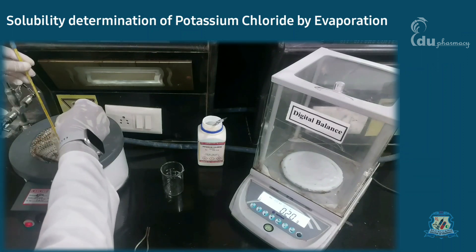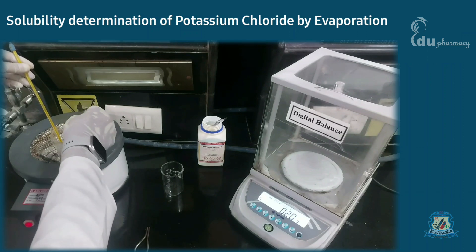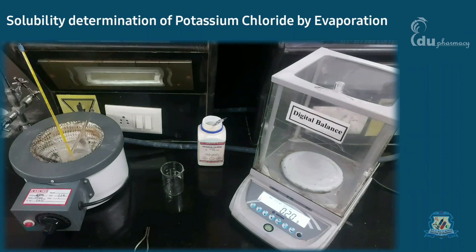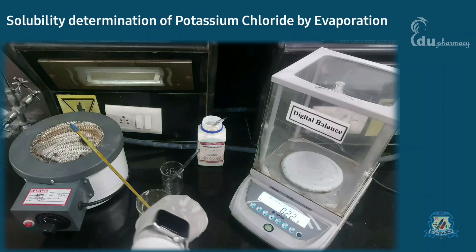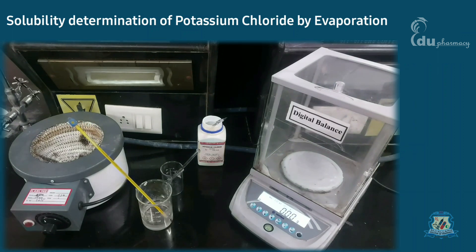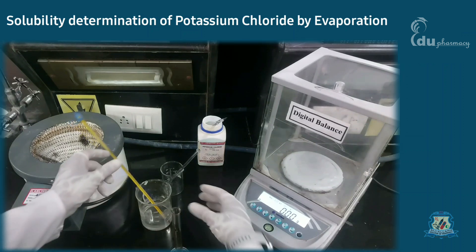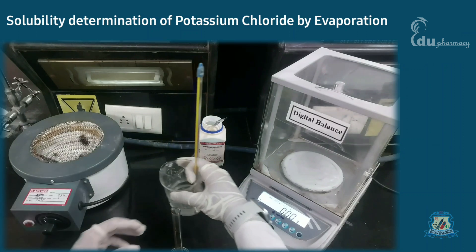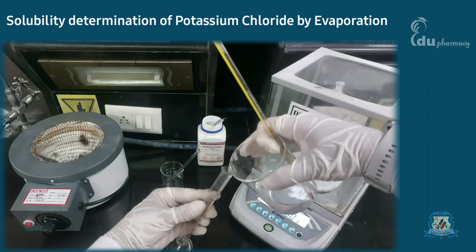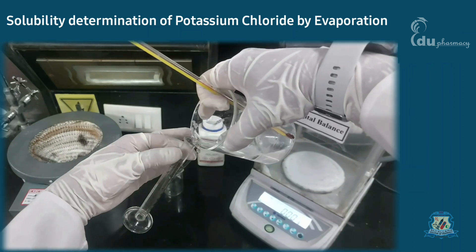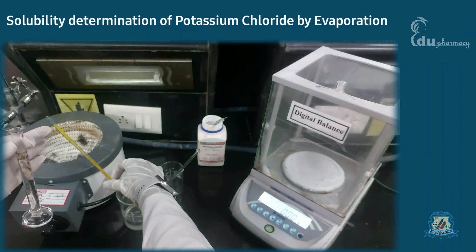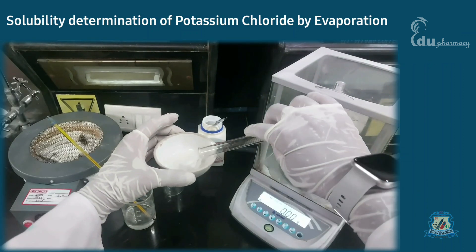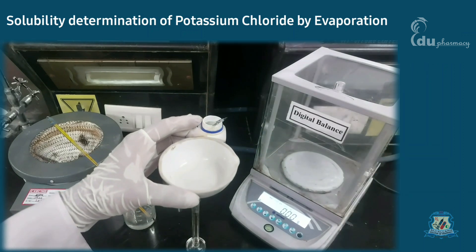Please note that we are going to determine solubility at 30, 50, and 70 degrees in this video. Remove the beaker from the heating mantle and allow the solution to cool. Once the temperature drops to 70 degrees, withdraw 10 milliliters of solution and transfer it to a porcelain dish using a measuring cylinder. Take the weight of the porcelain dish with the solution.